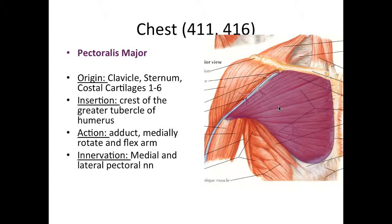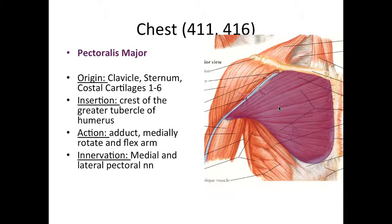I'll be demonstrating some of these actions in class. But right now, stick your left hand underneath your right armpit. Flex your arm at the shoulder joint, then adduct and also medially rotate your arm. When you do this, you can feel a very prominent tendon underneath your armpit and anteriorly — that's the tendon of pectoralis major.